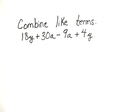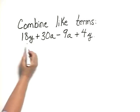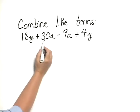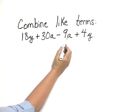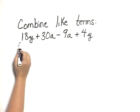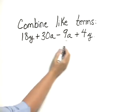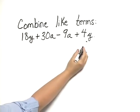Combine like terms: 18y plus 30a minus 9a plus 4y. The like terms in this are the 30a and the negative 9a, and 18y and 4y.